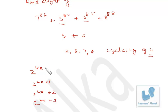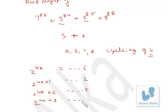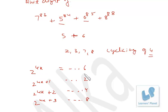So 2 raised to 4x will always end in 6, 4x+1 ends in 2, 4x+2 ends in 4, and 4x+3 ends in 8. The pattern is 6, 2, 4, 8. Not only for 2 — all even numbers except 0, when raised to power 4, will always end in 6.